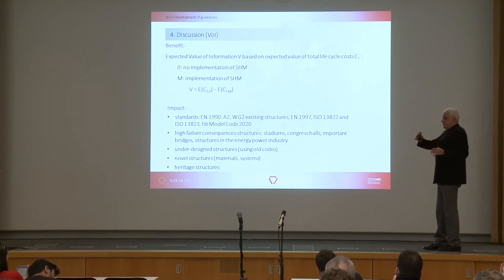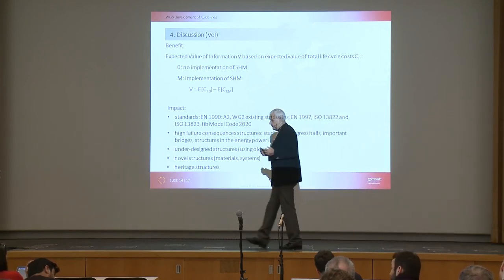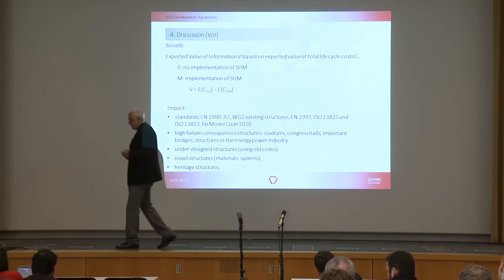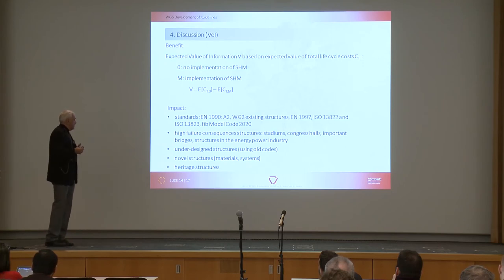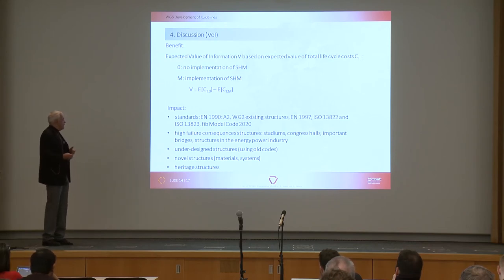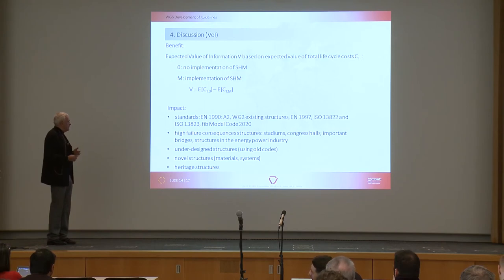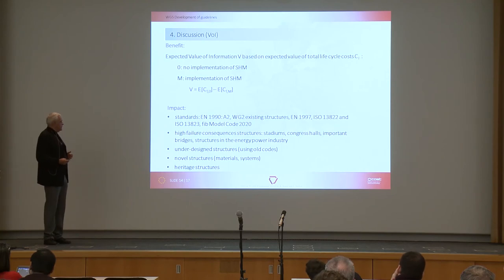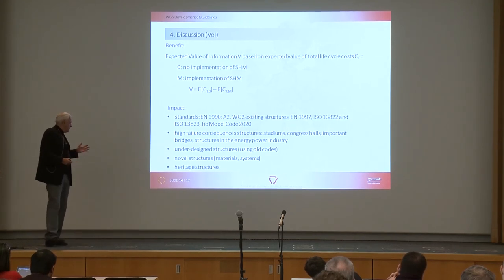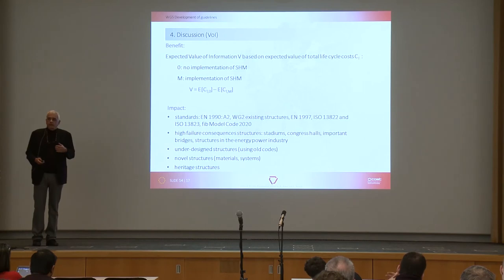We hope these three guidelines will have some impact. Impact has already started: monitoring will be included in the Eurocodes for existing structures through working group 2, and we have also pointed this out in meetings. We expect impact in FIB model codes as well. The impact will be especially relevant for high-failure-consequence structures such as stadiums, congress halls, bridges, structures in the energy and power industry, under-designed and existing structures using old codes, novel structures, and especially structures with high heritage value.